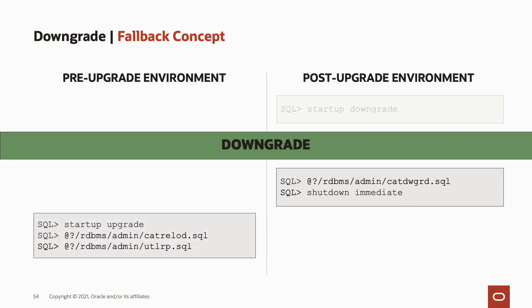Then you switch to the old pre-upgrade environment on the left by starting the database in upgrade mode, executing the startup upgrade command. Then you run the catreload script, which will reload the PL/SQL engine, the procedures, code, etc. When that completes, you run the utlrp script to recompile anything that is invalid. This usually happens pretty quickly because most things are correctly set already. Now your database is successfully downgraded. You can do a final check with select * from V$version to confirm this.